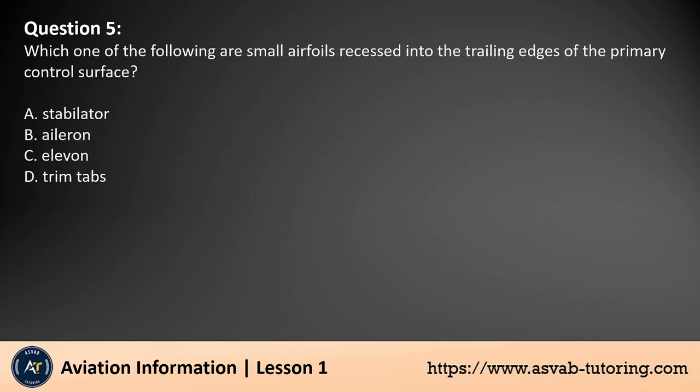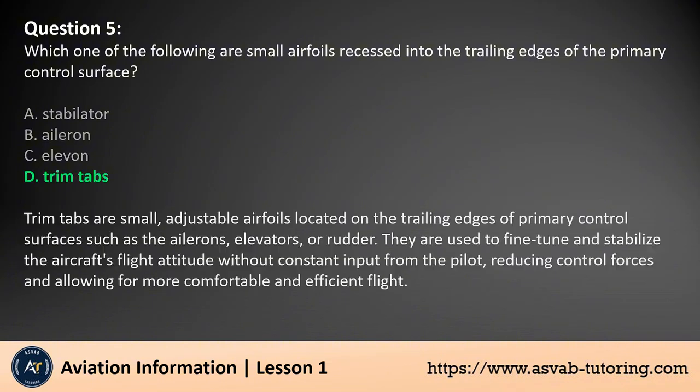Question 5. Which one of the following are small airfoils recessed into the trailing edges of the primary control surface? A. Stabilator. B. Aileron. C. Elevon. D. Trim tabs. The answer is D. Trim tabs are small, adjustable airfoils located on the trailing edges of primary control surfaces such as the ailerons, elevators, or rudder. They are used to fine-tune and stabilize the aircraft's flight attitude without constant input from the pilot, reducing control forces and allowing for more comfortable and efficient flight.